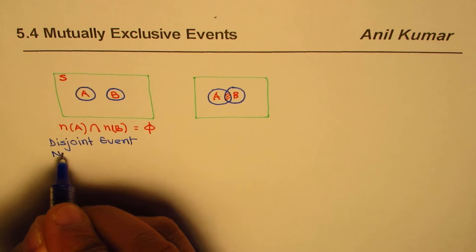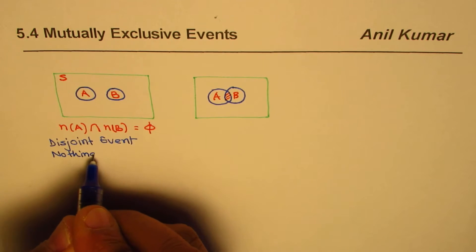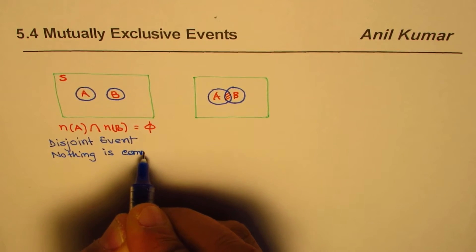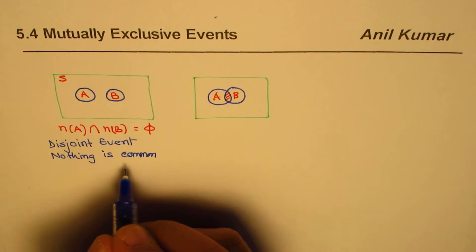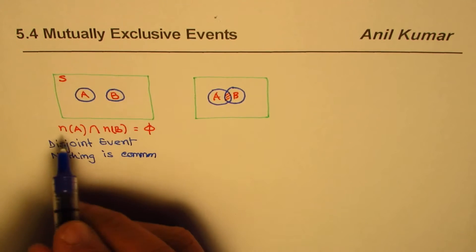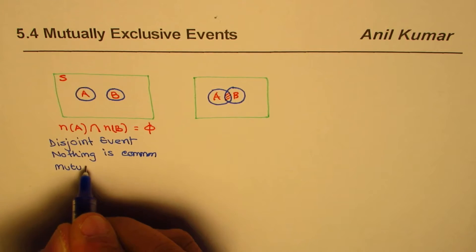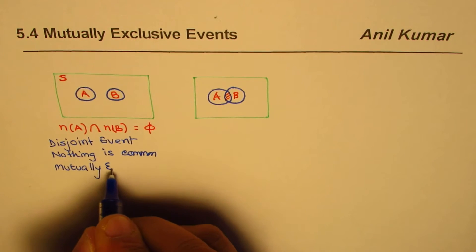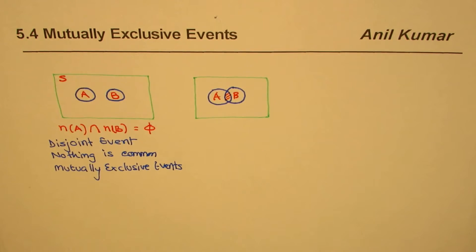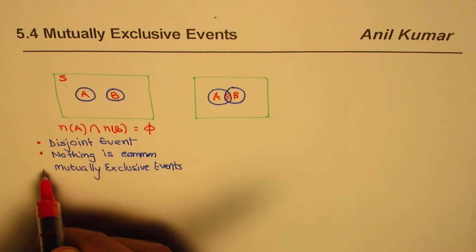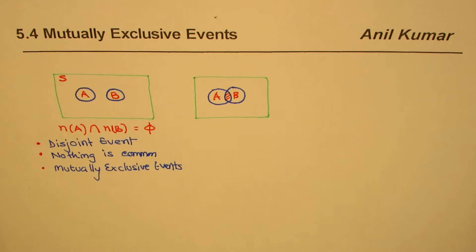These are different terms which you may come across — disjoint means there is no common connection, or nothing is common between the two. When we say common, we are looking for common elements. No common elements — such events are defined as mutually exclusive events, as shown in the sample space where nothing is shared between the two events.